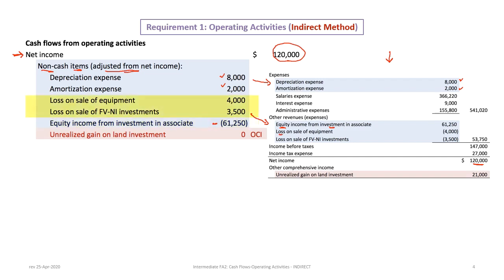Then we have a loss on sale of equipment and a loss on sale of FVNI investments. The loss on equipment is $4,000 — it's included in net income, so we must add that back. Then we have the $3,500 loss on sale of FVNI investments that also needs to be added back. So basically, we add back non-cash expenses like depreciation and amortization, add back non-cash losses, and subtract non-cash gains.